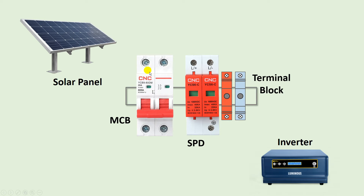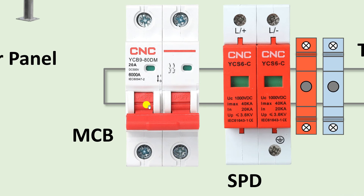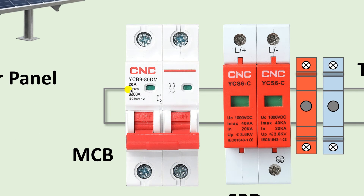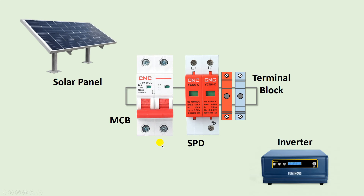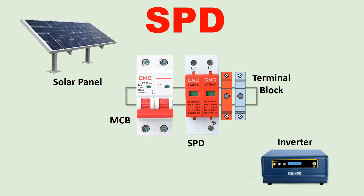Inside this DB box, the MCB you will use must be one that works on DC power supply. Here you can see 'DC 500 volt' is written — it means we can use this MCB up to 500 volts. The current rating of this MCB is 20 ampere.